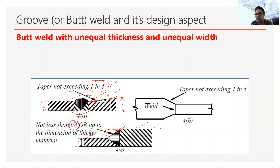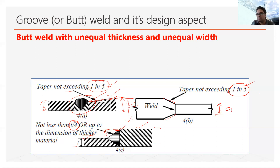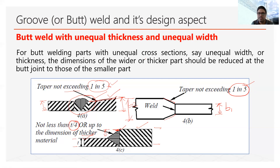If we have to join two plates of different widths — say B1 and B2 — we also apply a taper, and again this taper should not exceed 1 in 5. A taper of 1 in 4 or 1 in 3 would exceed the limit, while 1 in 6 or 1 in 7 is acceptable. These standards apply for butt welding with unequal cross-section and unequal width.